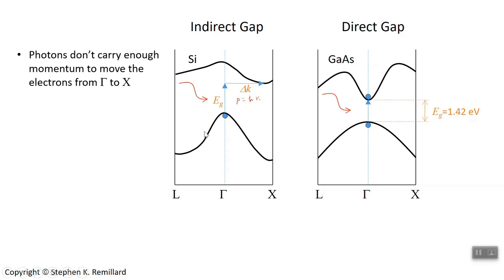With gallium arsenide, no impulse is needed because it's a direct bandgap semiconductor. The electron does not need to change its momentum in order to transfer from the valence band to the conduction band. That makes gallium arsenide more suitable for optoelectronics.